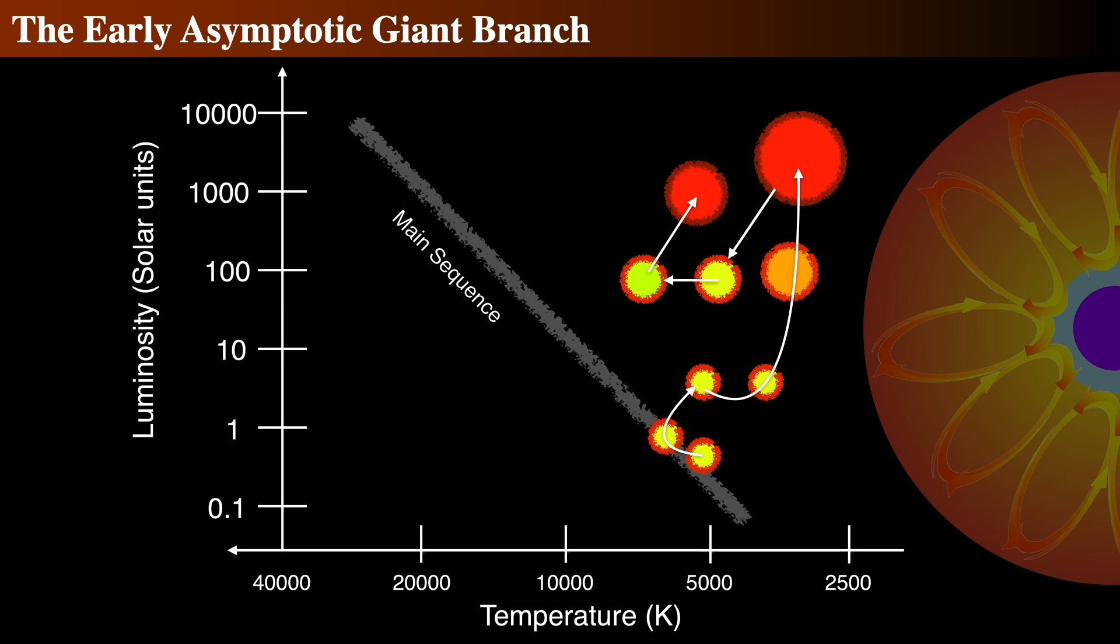The AGB can be thought of as the helium-burning shell analog to the hydrogen-burning shell red giant branch. At this point in the evolution, the core temperature of, say, a 5 solar mass star is approximately 2 times 10 to the 8th Kelvin, and its density is on the order of 10 to the 9th kilograms per cubic meter.